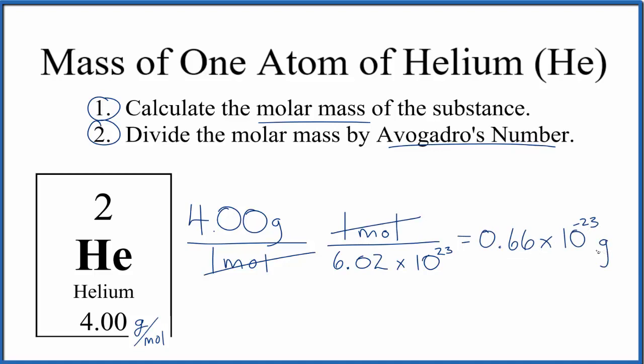This number makes sense - atoms are very small, so we should have a very small number. And we're dividing 4.00 by a huge number here, so it makes sense this is a very small number.